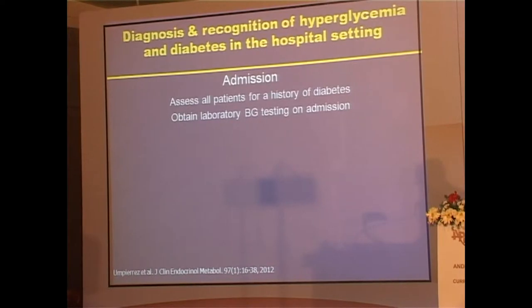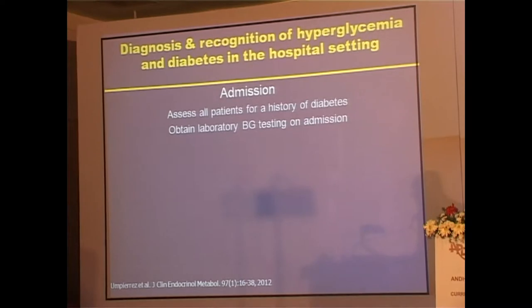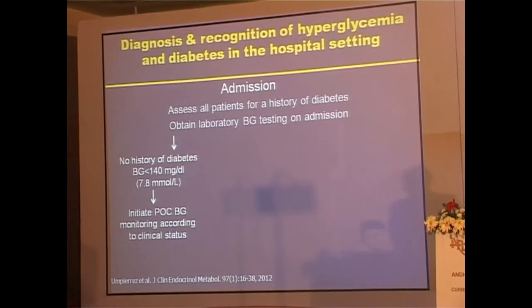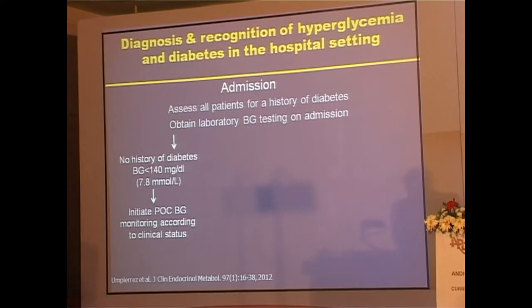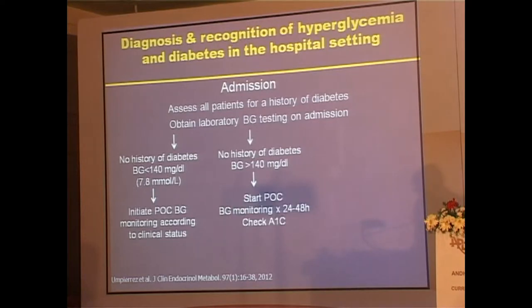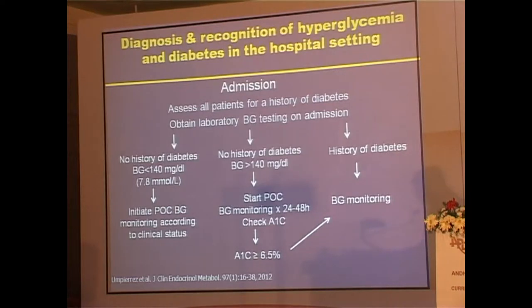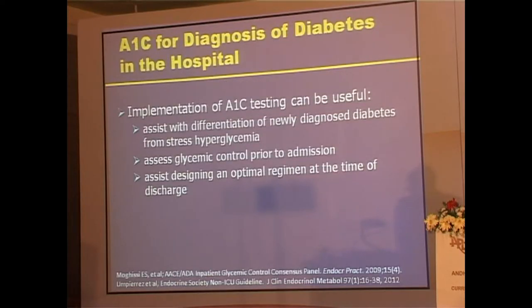When somebody is admitted to hospital, first look at the history of diabetes and obtain an admission blood glucose. If there is no history of diabetes and glucose is below 140, you may or may not test further. If there is no history of diabetes but glucose is above 140, start monitoring glucose, do an HbA1c, and reassess after a day or two. If A1C is above 6.5, continue blood glucose monitoring. Use A1C to differentiate new-onset diabetes from stress hyperglycemia: below 6.5 is stress hyperglycemia, above 6.5 is new-onset diabetes.